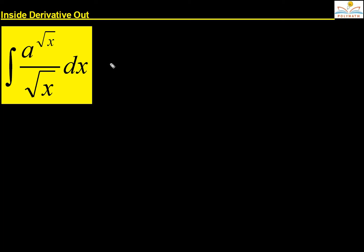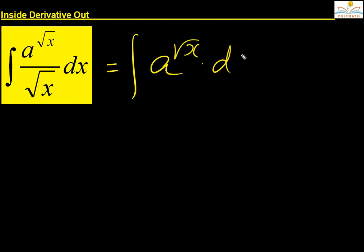If you observe carefully, the derivative of root x is 1 by 2 root x. So what I'm doing — I'm writing it as the integral of a power root x into the derivative of root x. The derivative of root x is 1 by 2 root x, but 1 by 2 is not present there. That is why I'm writing into 2 here.